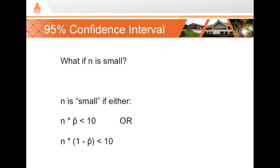Now let's look at what to do when n is small. With binary data, n is small if either n times p-hat is less than 10, or n times (1 minus p-hat) is less than 10. If either of those is true, n is considered small and we cannot use our formula as-is — just like when our sample size was small for continuous data.